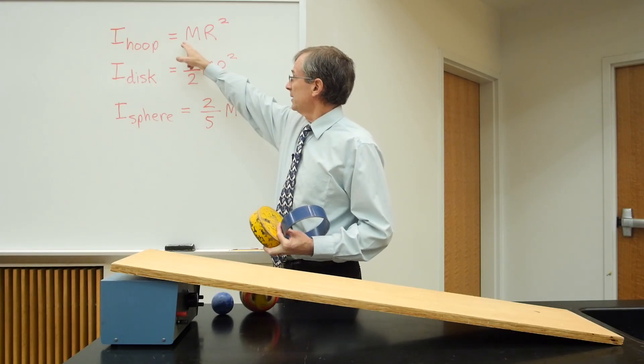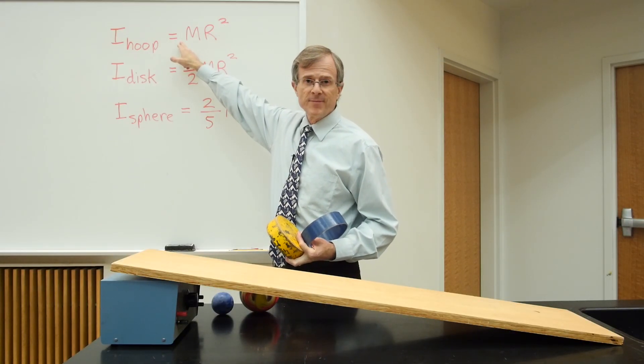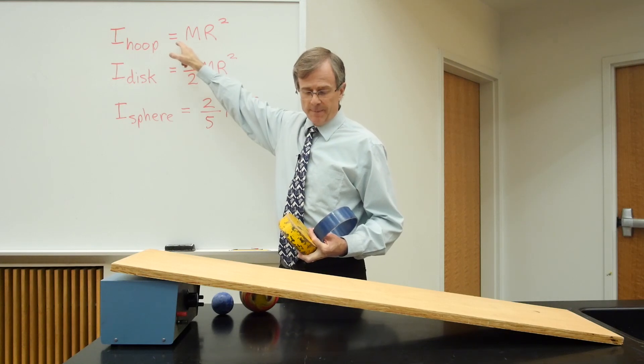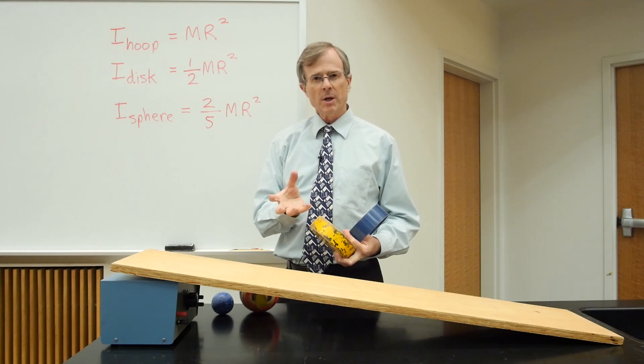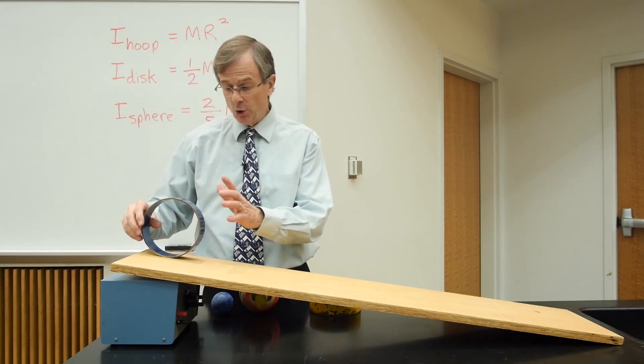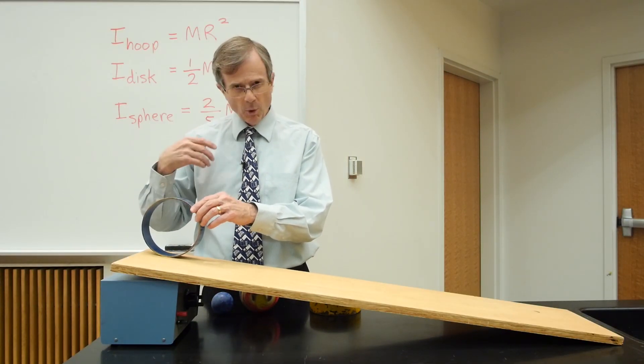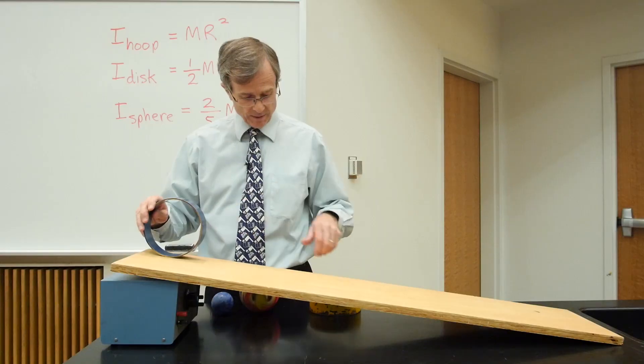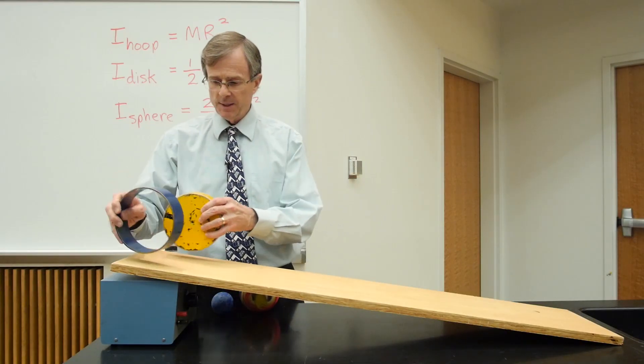The bigger the factor out here—this factor is 1—if it's a big factor like 1, it has a large resistance to turning motion. So this hoop, it has more resistance to turning than the disk does.